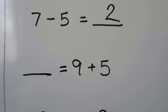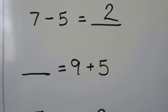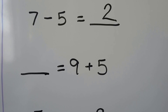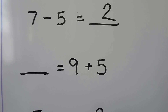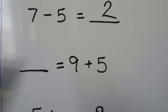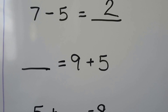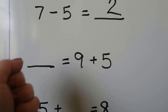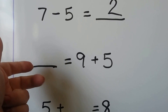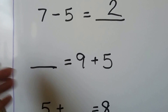Some number is equal to 9 plus 5. We can start with the 9, the larger addend, and count on 5: 9, 10, 11, 12, 13, 14.